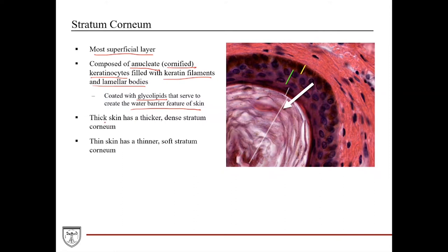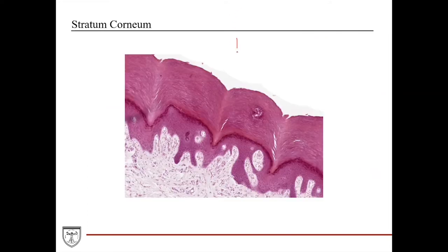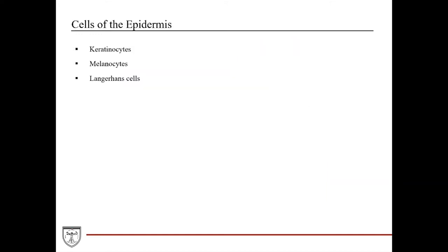One thing you need to know for histology exams is being able to differentiate thick skin from thin skin. Thick skin has a thicker, more dense stratum corneum, while thin skin has a thinner, softer stratum corneum. You can see this in the slides: thin skin is not as densely packed and much softer-looking, whereas thick skin has a much more densely packed and thicker corneum layer.